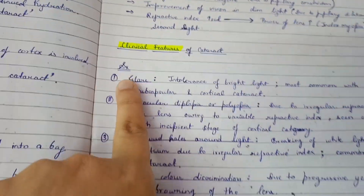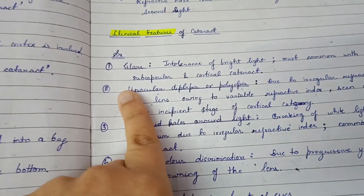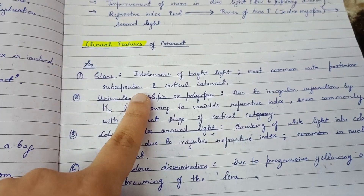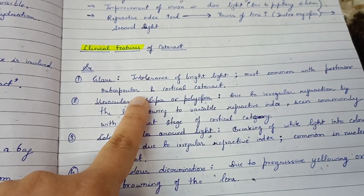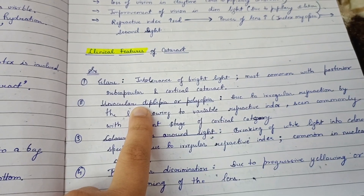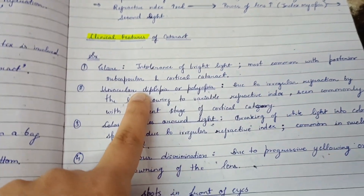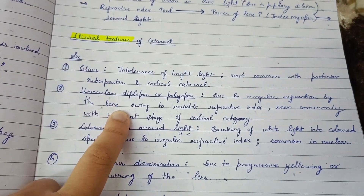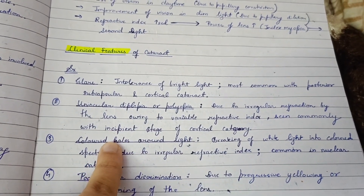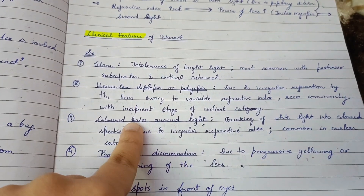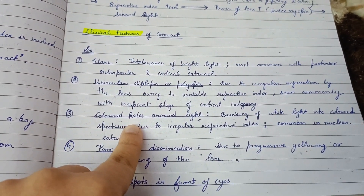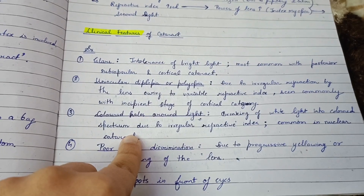Regarding symptoms of cataract: glare is intolerance of bright light, most commonly seen with posterior subcapsular and cortical cataract. Uniocular diplopia and polyopia occur due to irregular refraction by the lens owing to variable refractive index, seen commonly in the incipient stage of cortical cataract. Colored halos around light are also seen.